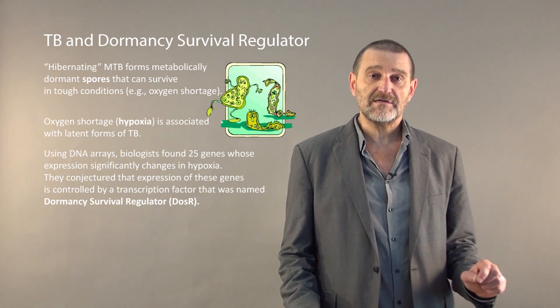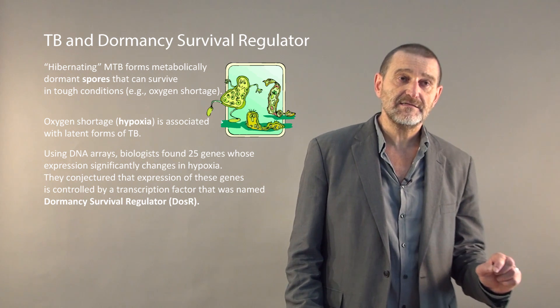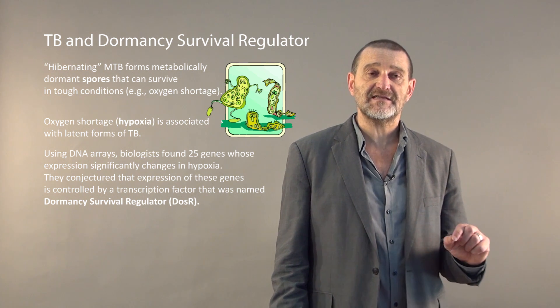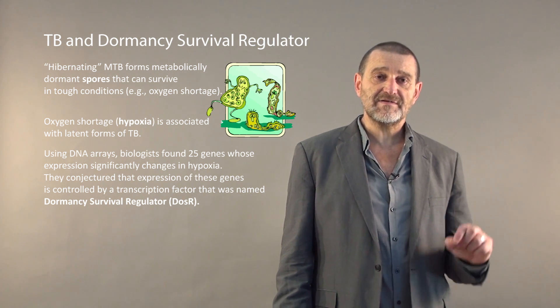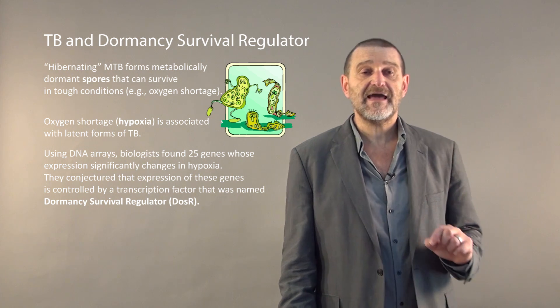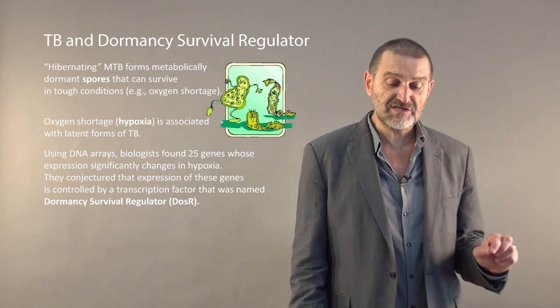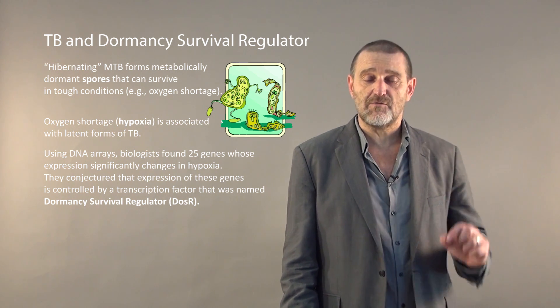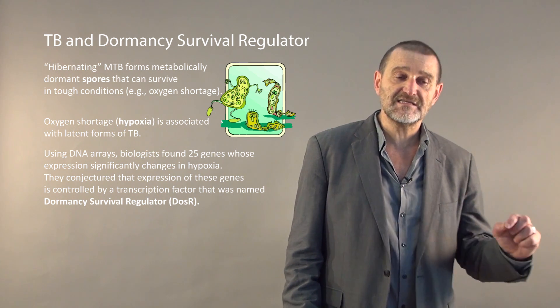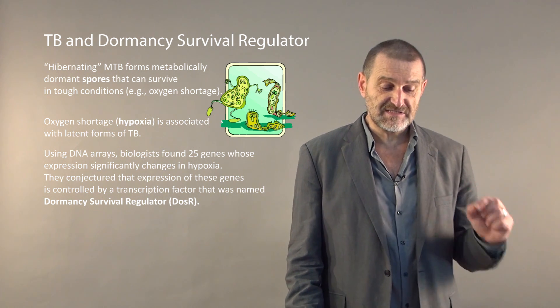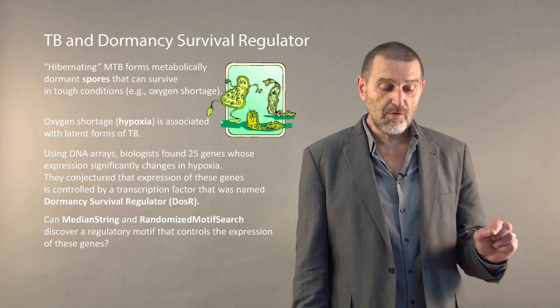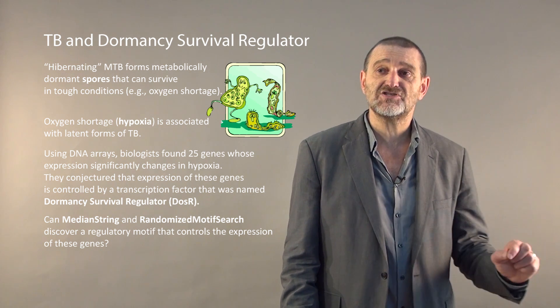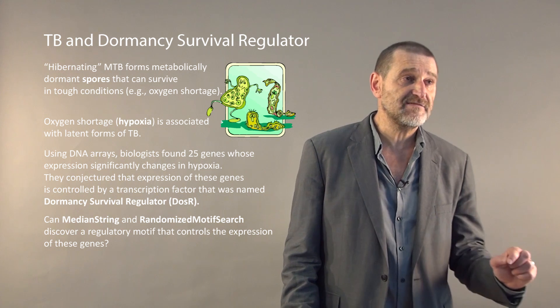So how can we figure out what makes MTB switch into latent states and return back into active states? What biologists have done is they performed a DNA experiment and identified roughly 25 genes that are activated in the hypoxic condition. When bacteria is deprived from oxygen, these genes dramatically change their expression. Our goal today is to discover what regulatory motif controls these genes when they are activated or repressed.